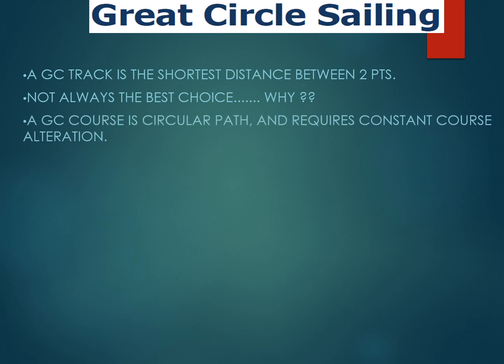A great circle course is a circular path and requires constant course alteration. Not only that, but a great circle will also take you into higher latitudes where the weather might be bad, too cold, or the ship may not be suited for such navigation. That is why it is not always the best choice. The difference between rhumb line sailing, which is Mercator sailing, and great circle sailing is that rhumb line courses are also the shortest distance between any two points in Mercator sailing.